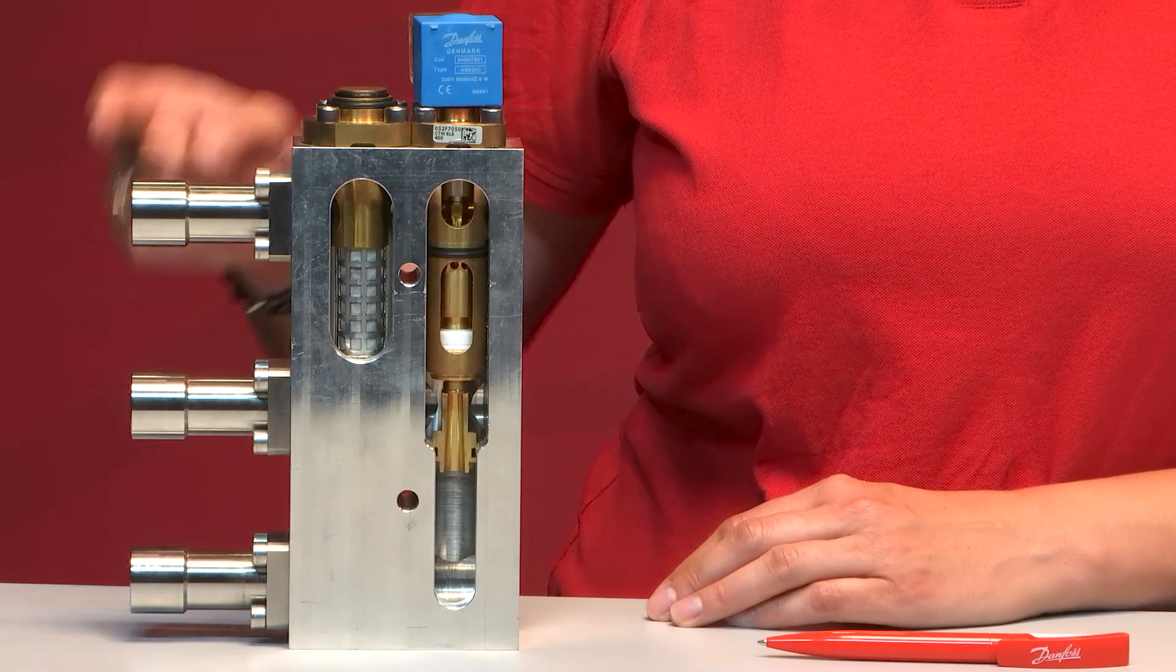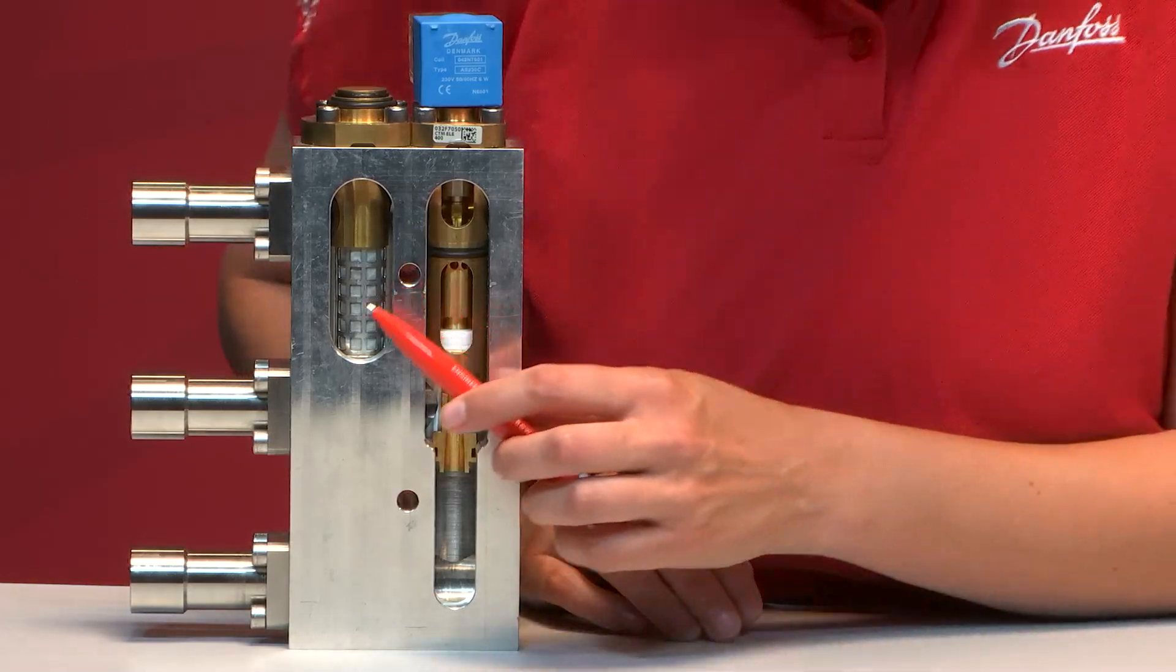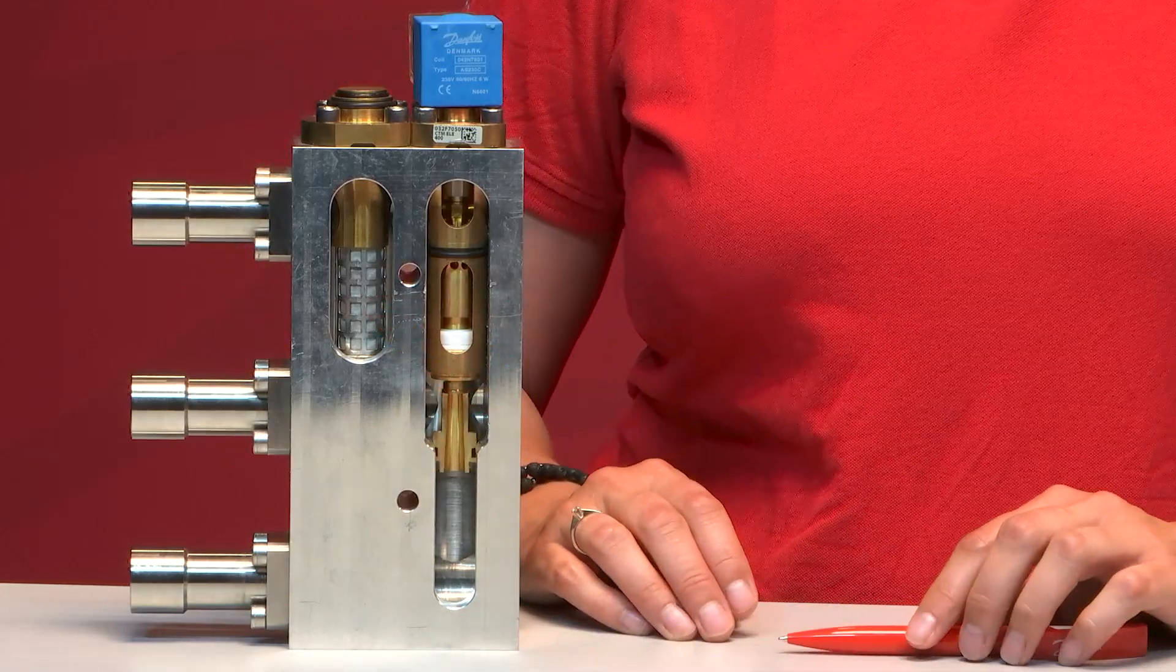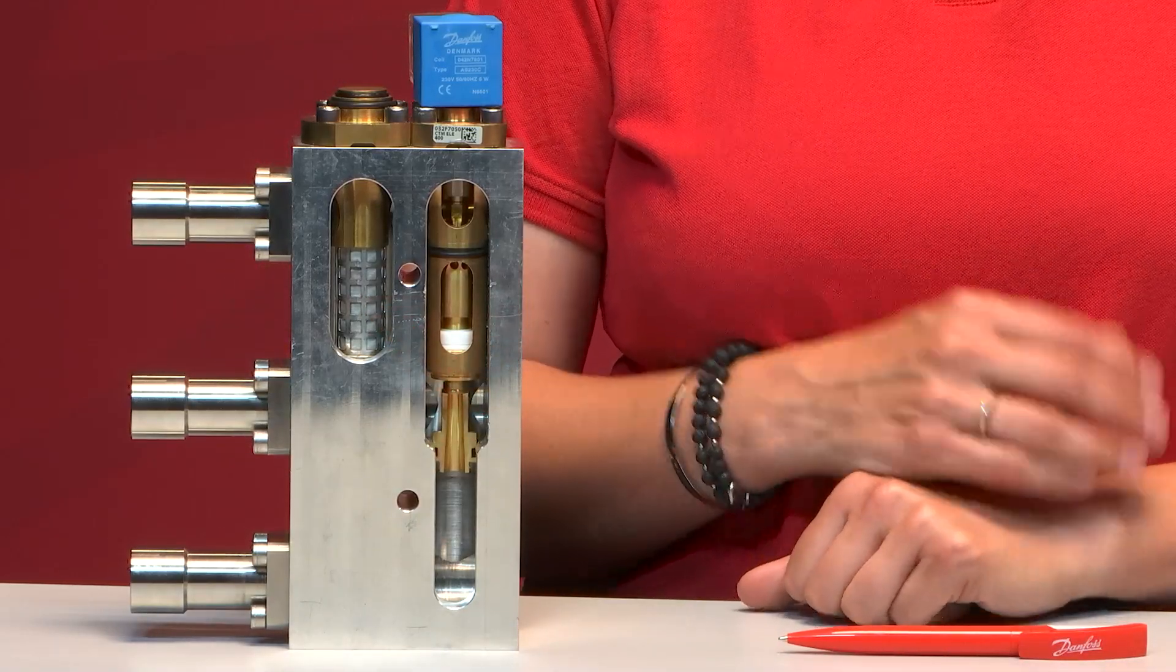First, the CO2 enters into the ejector block through the strainer, which you see here. The strainer makes sure to remove particles in order to protect the ejector.